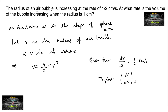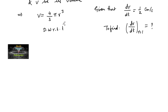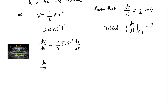At r = 1 centimeter, let's differentiate the volume with respect to t. So dv/dt = 4/3 · 3r² · dr/dt by the chain rule. Hence dv/dt = 4π r² · (dr/dt), and with dr/dt = 1/2.